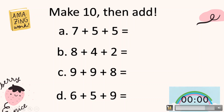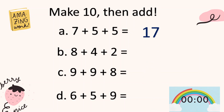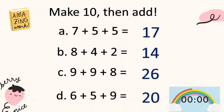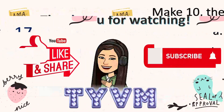Let's check your work. For letter A: seven plus five — five and five make ten, then add seven, so ten plus seven is seventeen. Very good. Letter B: eight and two makes ten, then plus four — yes, fourteen. Letter C: give one to nine to make ten, and then we have six plus eight, so that is twenty-six. Letter D: give one from five to nine to make ten, then six and four is ten, so it's twenty. Yay, very good!